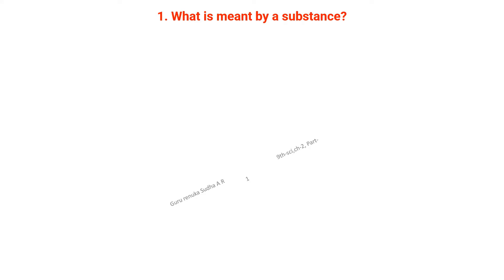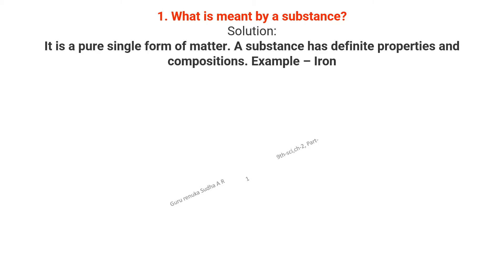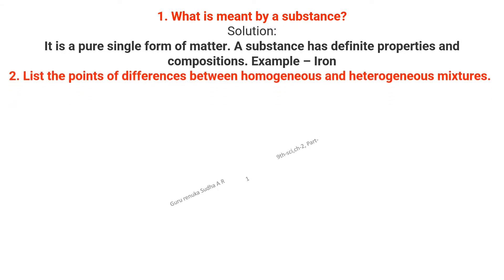The first important question in your textbook asks: what is meant by a substance? A substance is a pure single form of matter. A substance has definite properties and a definite composition. For example, iron.